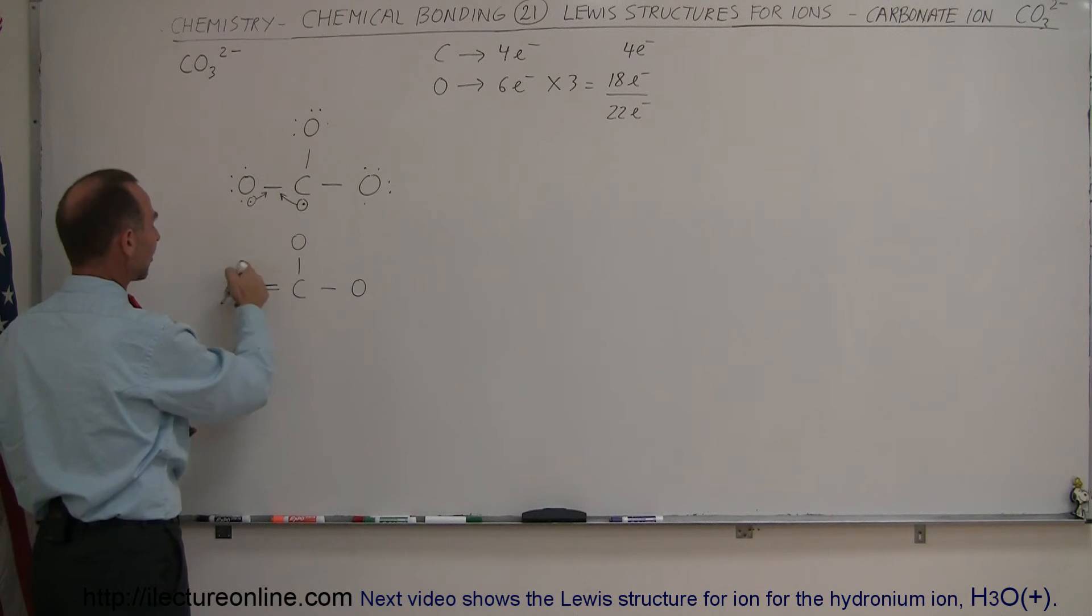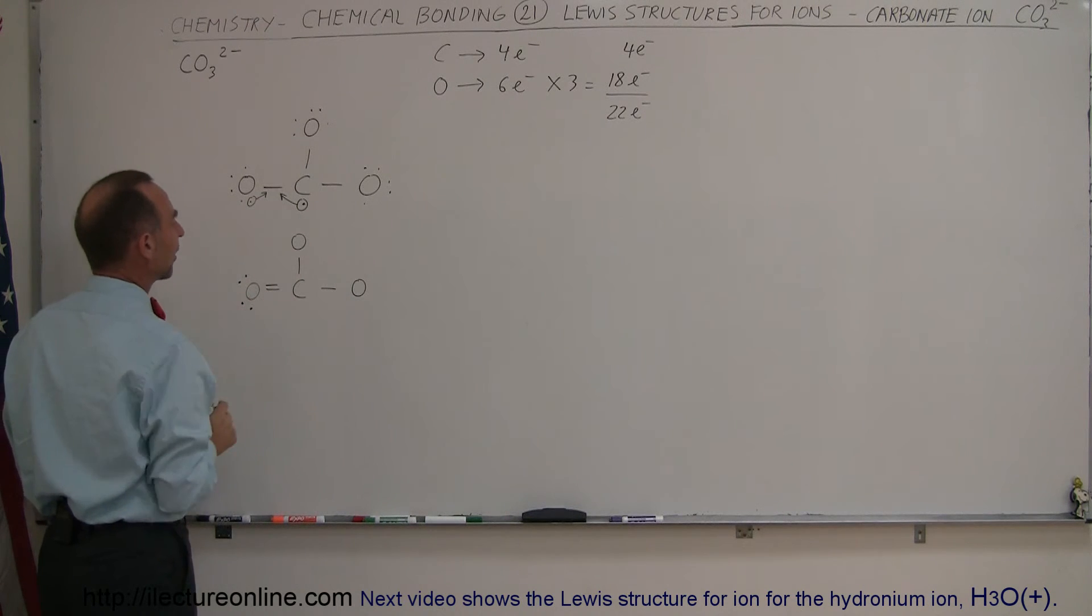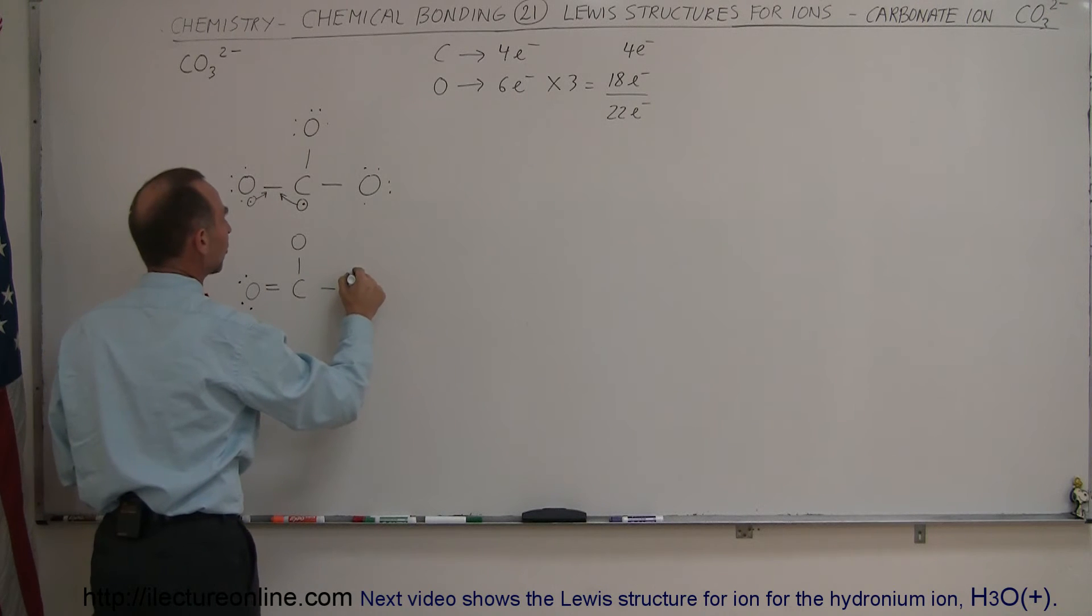Notice that this oxygen now has eight valence electrons—four that it's sharing plus the extra four. Carbon has eight electrons, so the octet rule is satisfied there. But what about this oxygen right here?